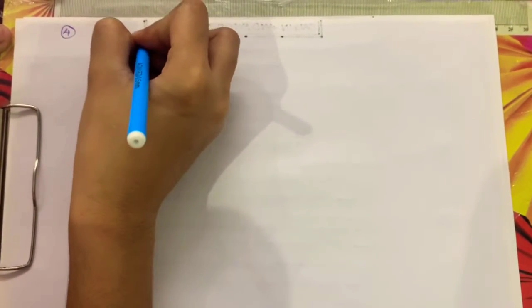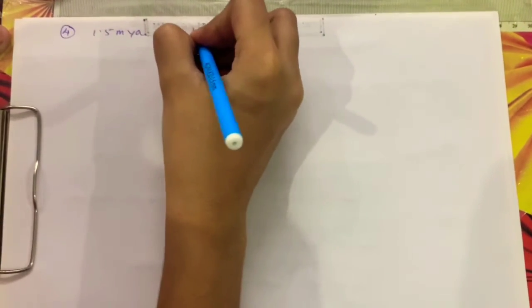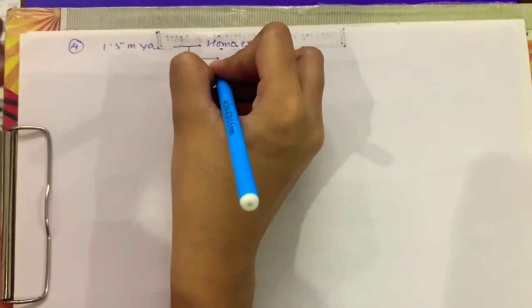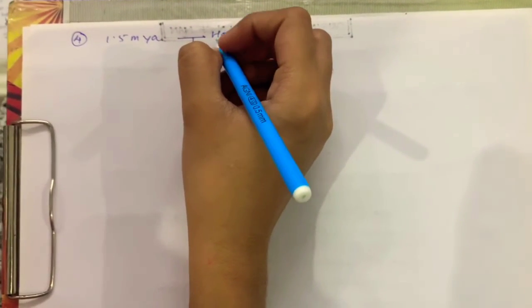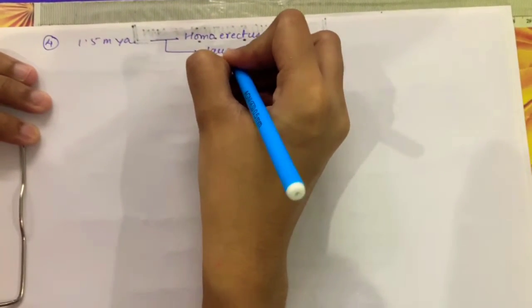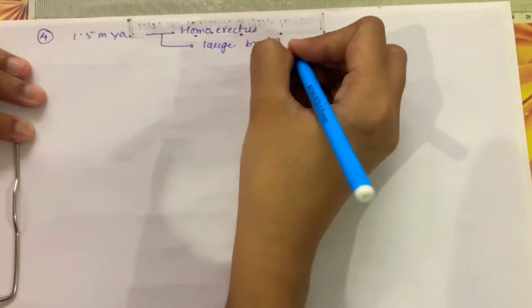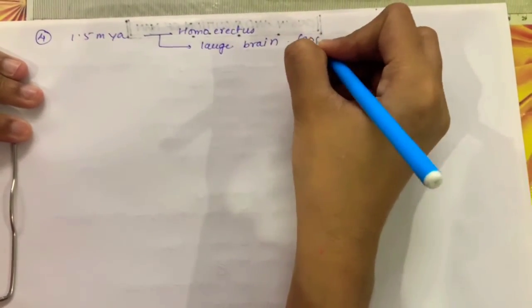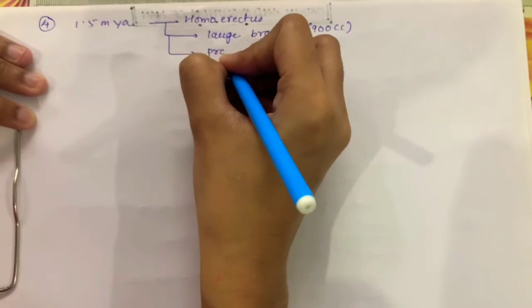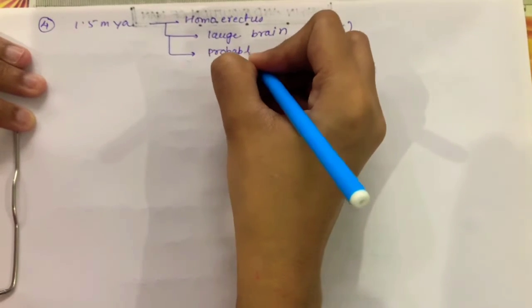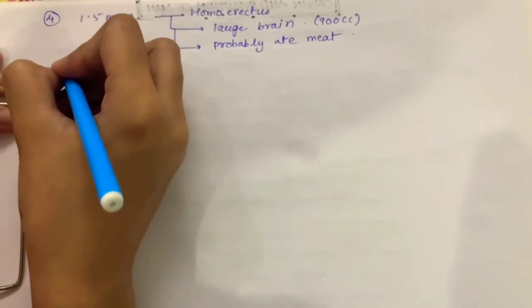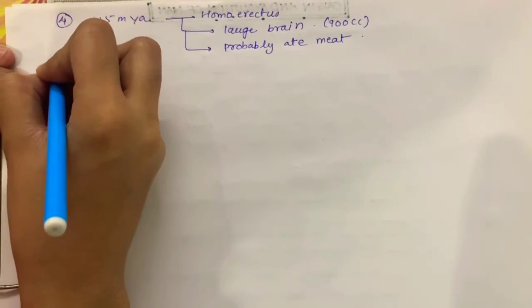What were their features? They had a large brain, about 900 cc brain capacity, and probably ate meat. It's not confirmed yet that they ate meat; it's written 'probably they ate meat.'